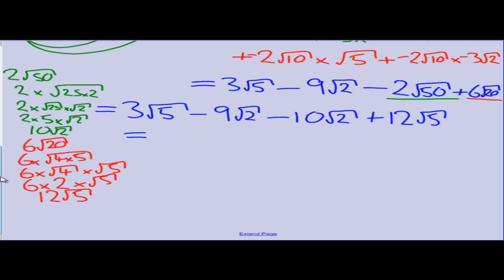Now what do we start to notice? We start to use another previous skill of adding together and subtracting surds. We've got a square root of 5 and a square root of 5, and we have a square root of 2 and a square root of 2. So we need to add these together. We've got 3 root 5 and another 12 root 5, so we have 15 root 5. Then we have negative 9 root 2s, take away another 10, so we've got negative 19 root 2s.